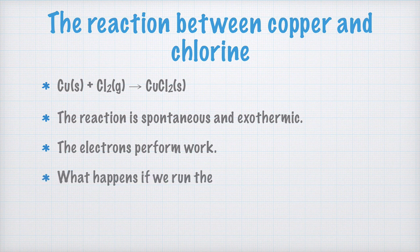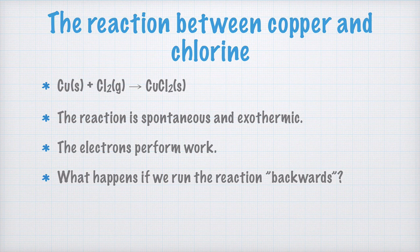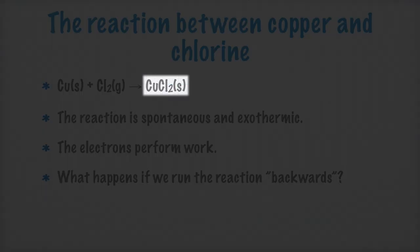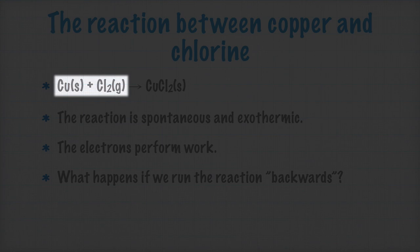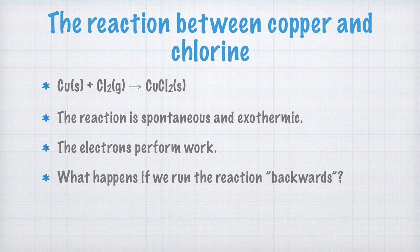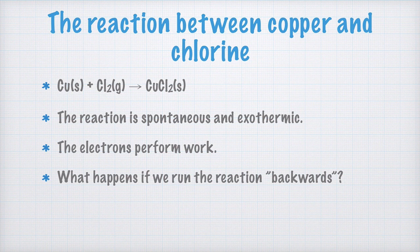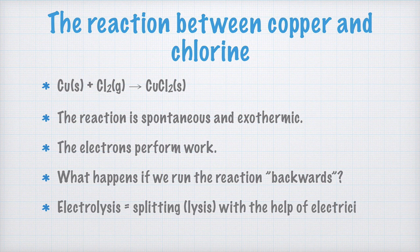But what would happen if we ran this reaction backwards? Is it possible to start with cupric chloride and in some way get copper and chlorine gas? Yes, you can, with the help of electricity. That is why this reaction is called electrolysis, because you split, or lyse, the cupric chloride with the help of electricity.